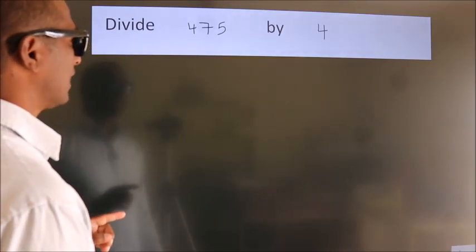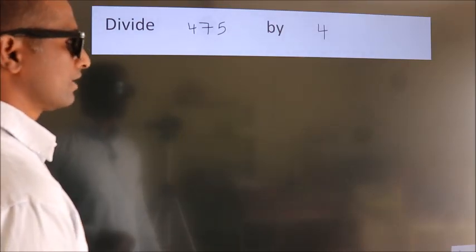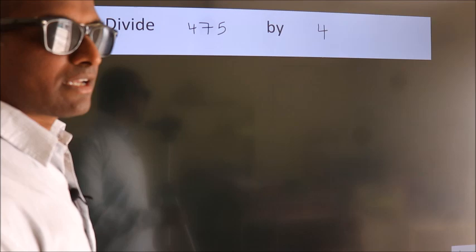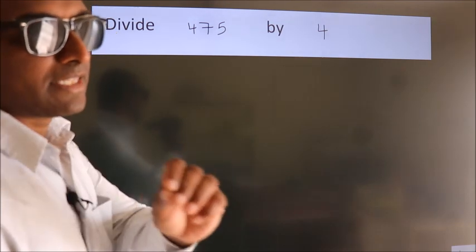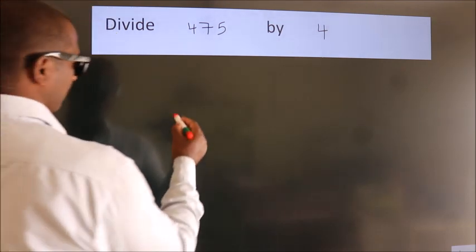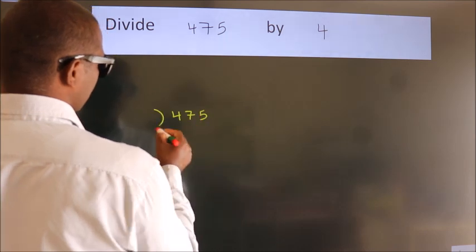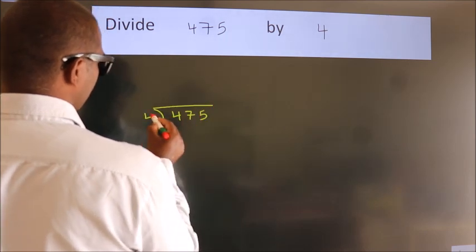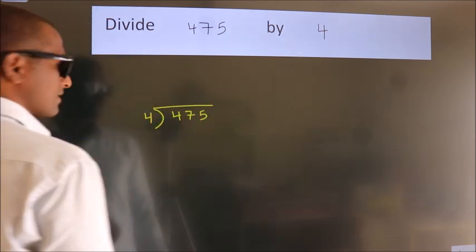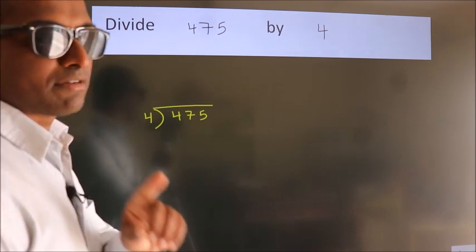Divide 475 by 4. To do this division, we should frame it in this way. 475 here, 4 here. This is your step 1.